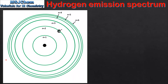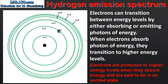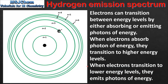We'll start with a review of the Bohr model of the atom. According to this model the protons and neutrons are located in the nucleus of the atom and the electrons are located in energy levels or shells around the nucleus. The first point to note is that electrons can transition between energy levels by either absorbing or emitting photons of energy. When electrons absorb photons of energy they transition to higher energy levels, and when electrons transition to lower energy levels they emit photons of energy.